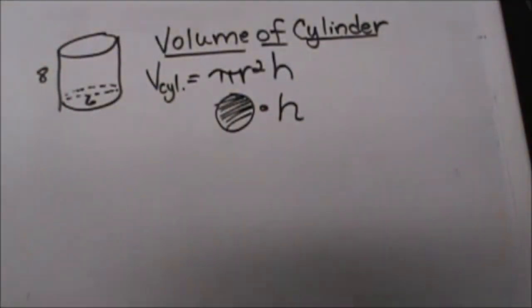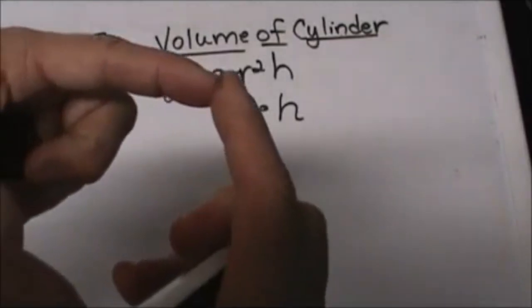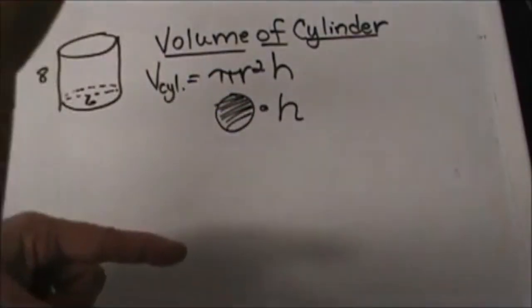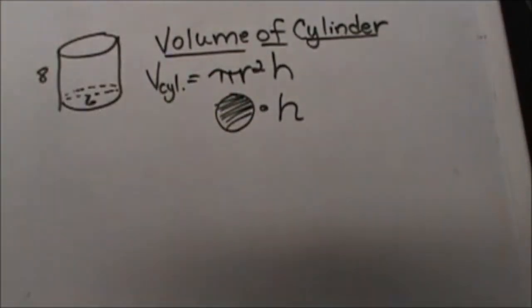So that works for any volume formula. If you can find the area of the base, then you just multiply it times the height and you have the volume. So it just takes it to the third dimension.